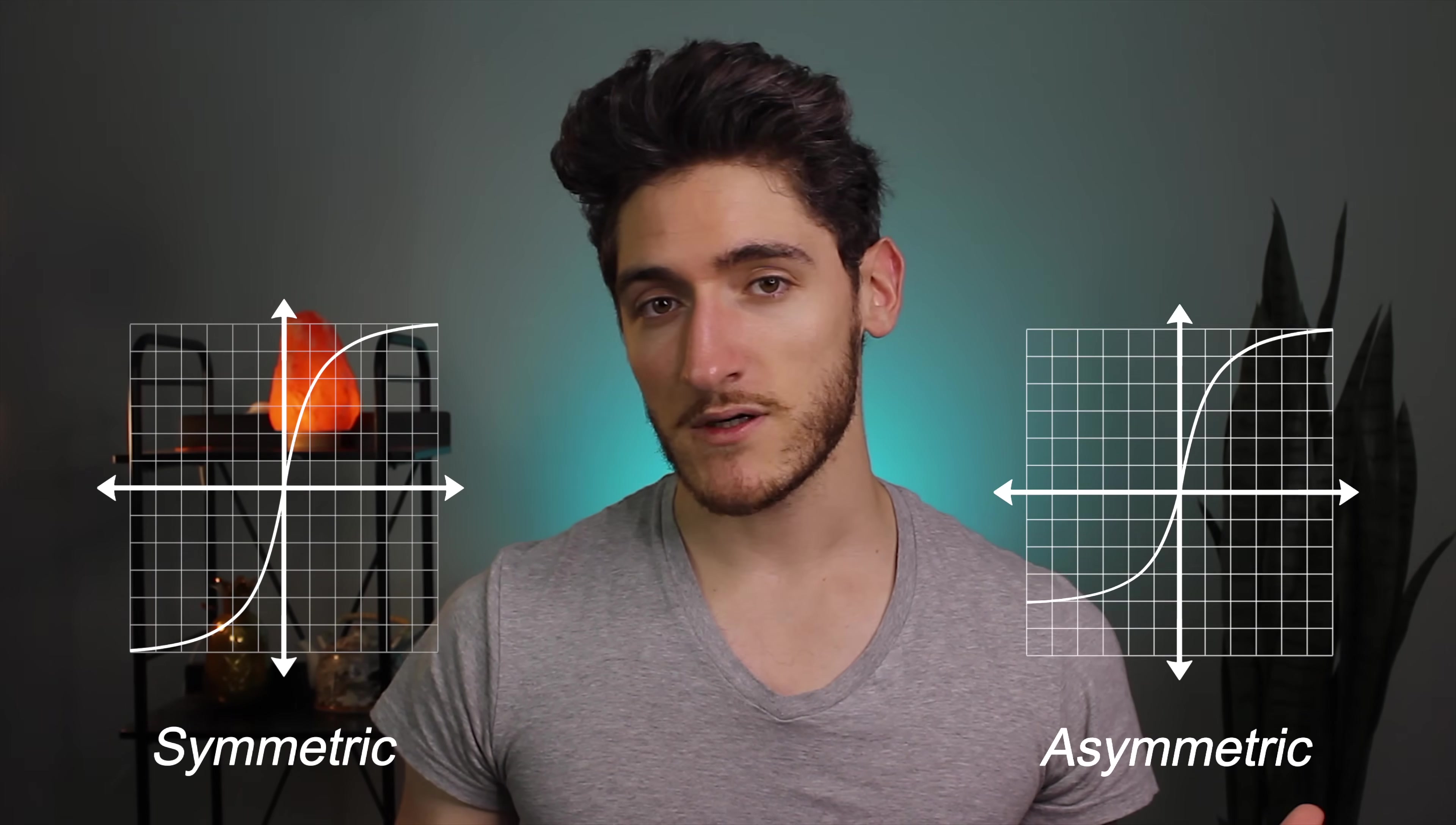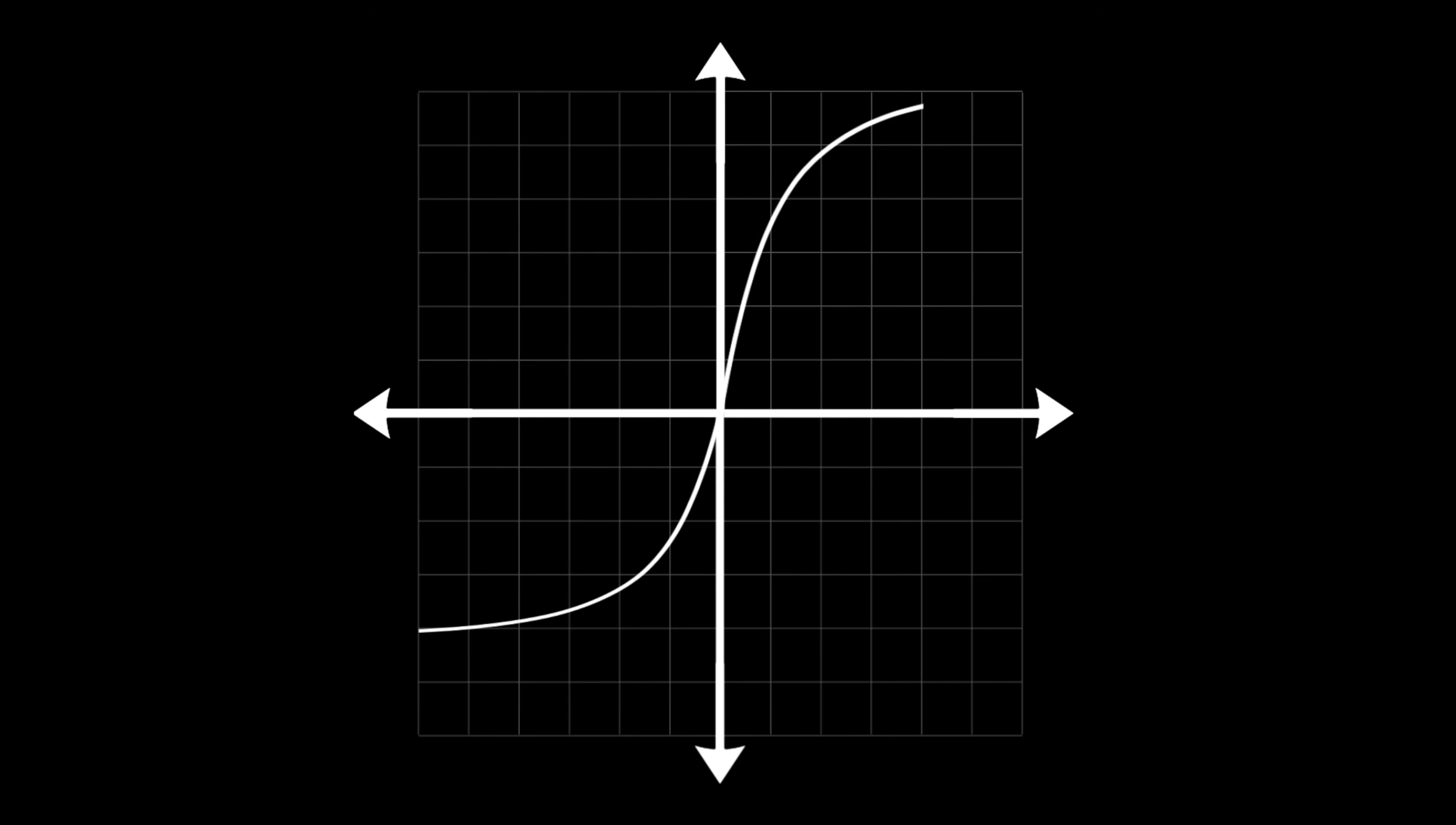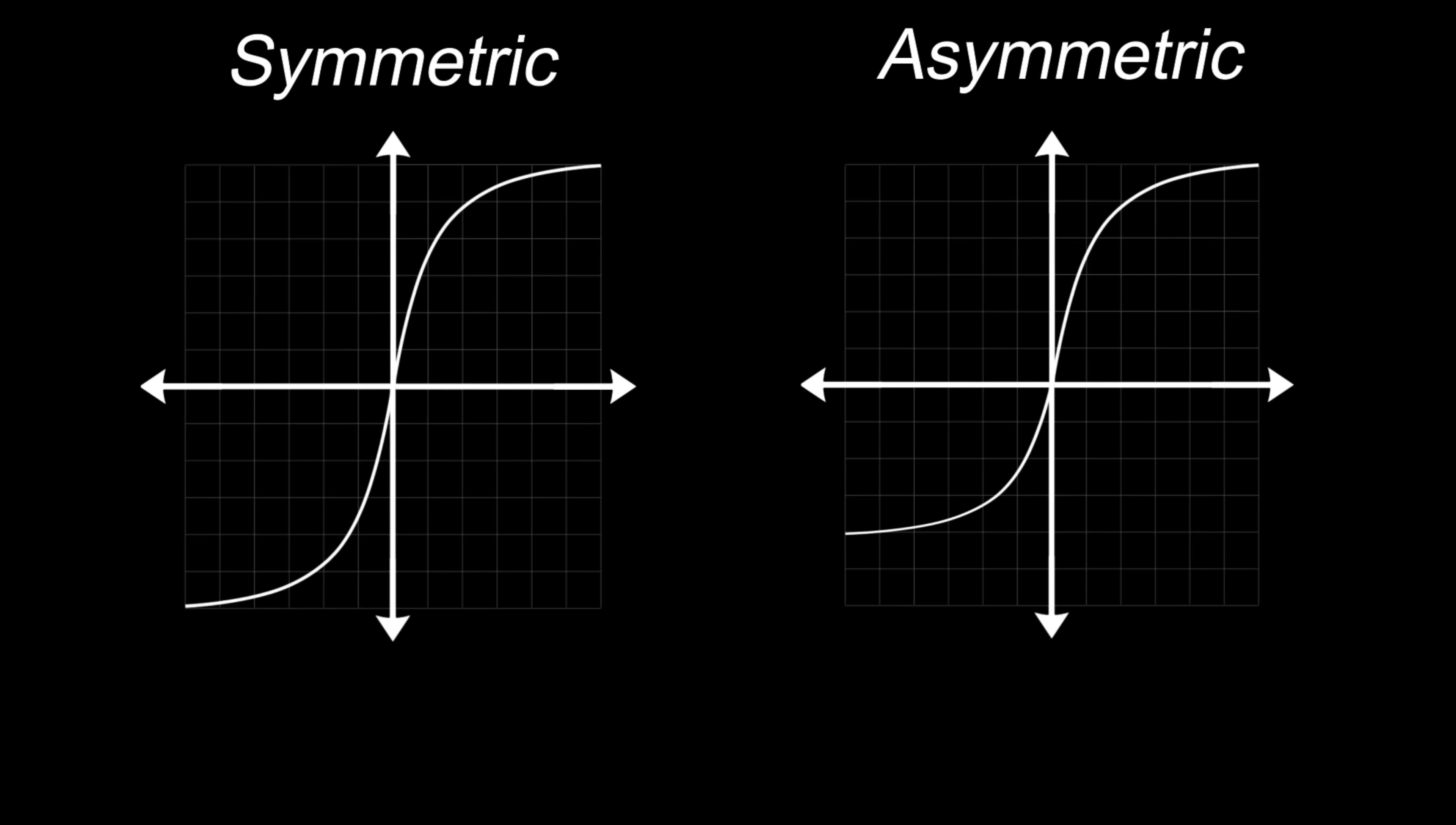But in which situations should you choose symmetric and in which situations asymmetric? Knowing the differences in sound between these two curves and how they affect your mix is crucial. We'll start with asymmetric. Asymmetric curves tend to fill up the frequency spectrum more than symmetric curves because while both these curves create odd harmonics, asymmetric curves tend to also create more even harmonics. Now there are some exceptions to this, but most of the time this is true.